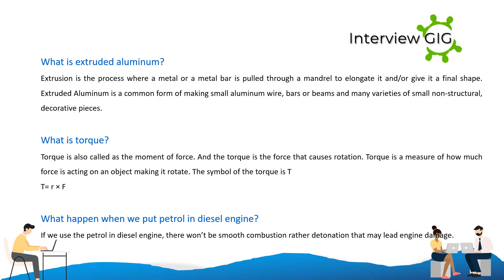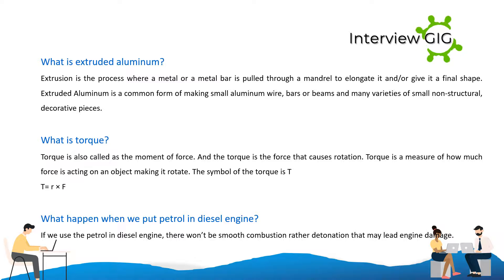What is extruded aluminum? Extrusion is the process where a metal bar is pulled through a mandrel to elongate it or give it a final shape. Extruded aluminum is a common form of making small aluminum wire, bars or beams, and many varieties of small non-structural decorative pieces.